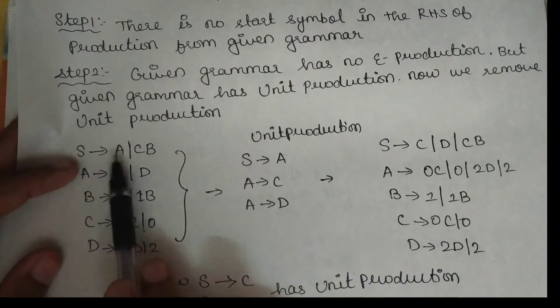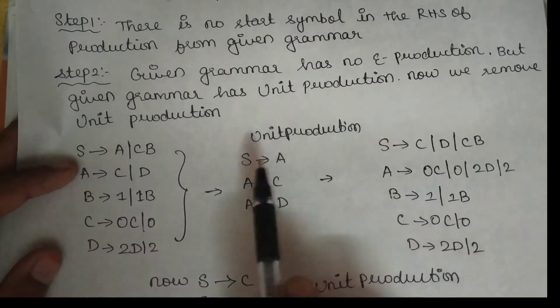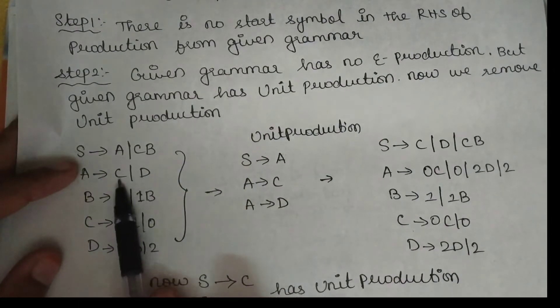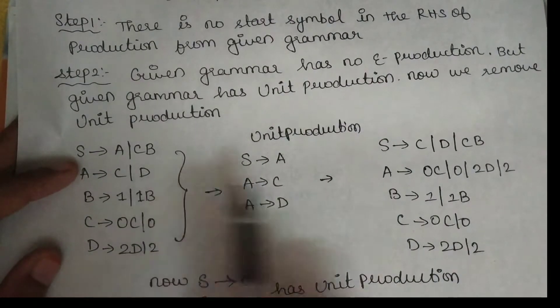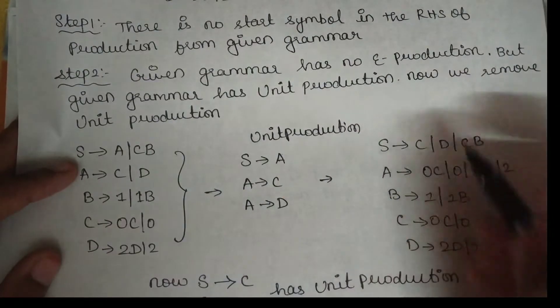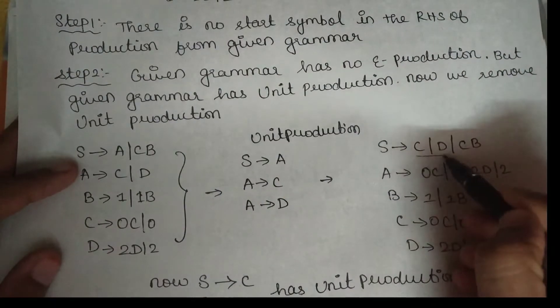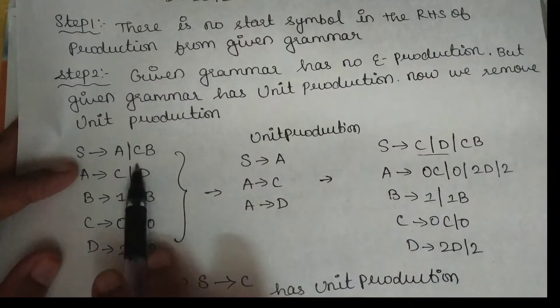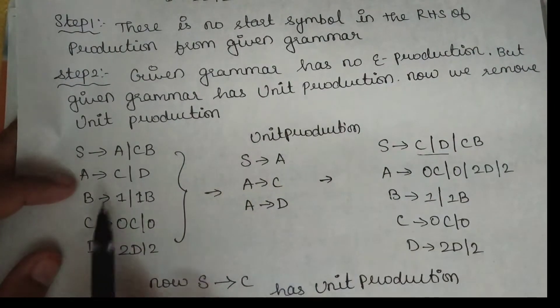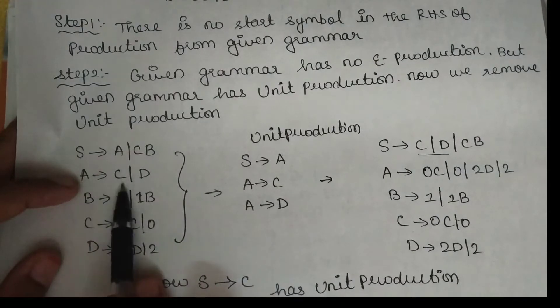How do we remove them? We substitute. What is S to A? What is the value of A? It gives Cu, Du. So if S goes to A, we substitute A's values — which are C and D — in place of A. That is the substitution.